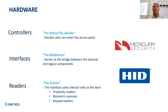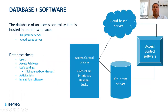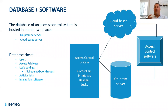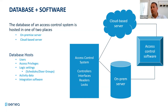Genea is built upon non-proprietary hardware. At a very high level, we support both Mercury as well as HID - those are our partners on the hardware side when it comes to interfaces, controllers, and readers. When we talk about the database and software, going beyond just the hardware - when you have an access control system there's a software component, and it can be on-prem or cloud-based. What's the overall purpose of it? How does it communicate back to the controllers? Especially as a cloud-based solution, how do we communicate back to the head end, the master controller?